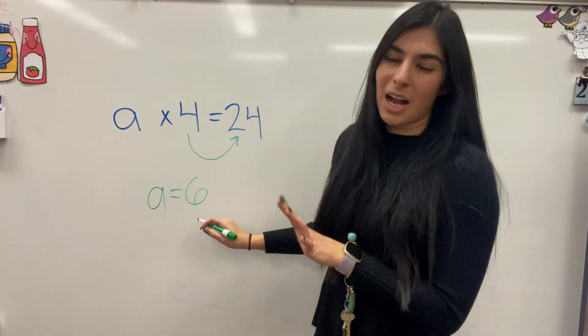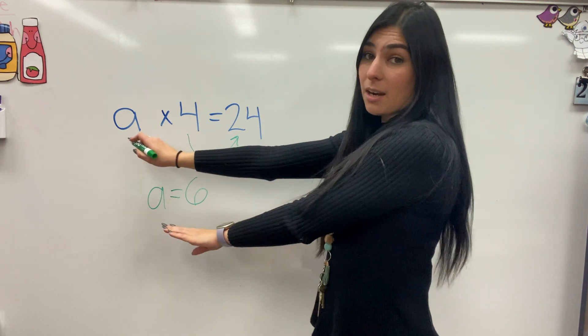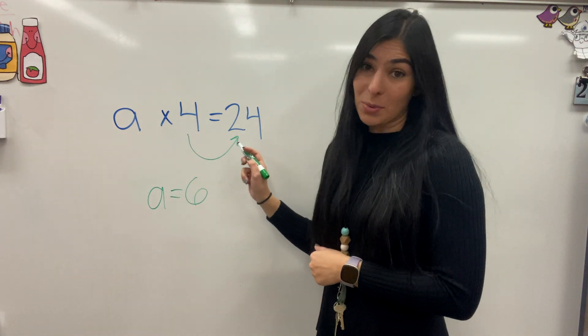And you have to think of this kind of like a little code. So this is your key that lets you know if you were to plug in 6 here, the equation will work. 6 times 4 equals 24.